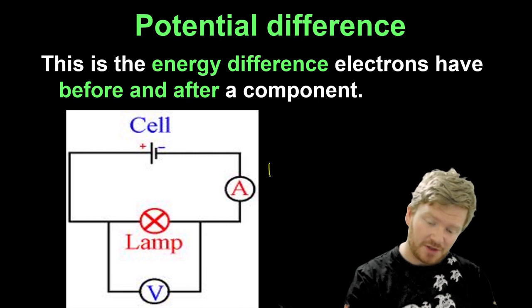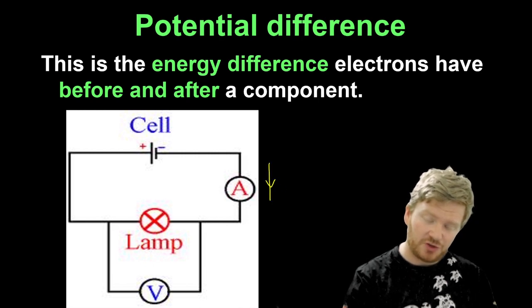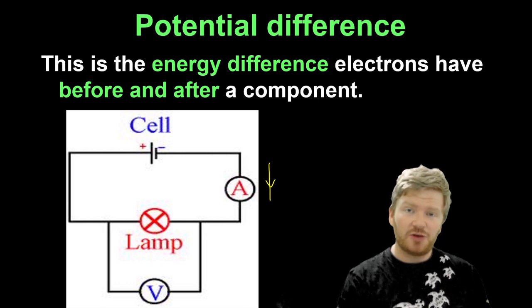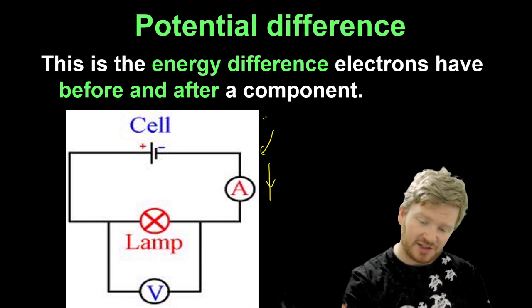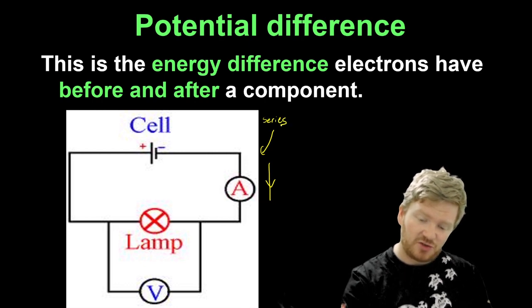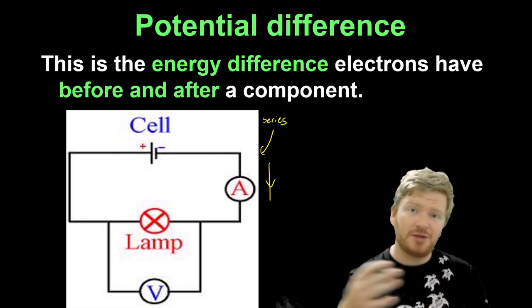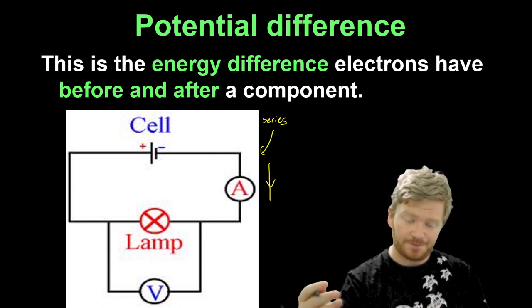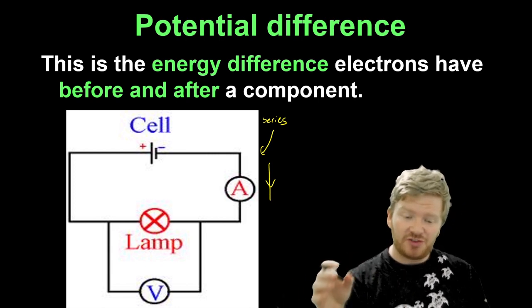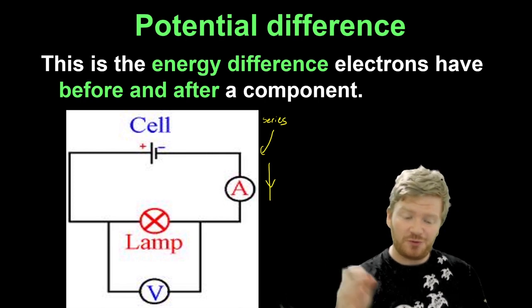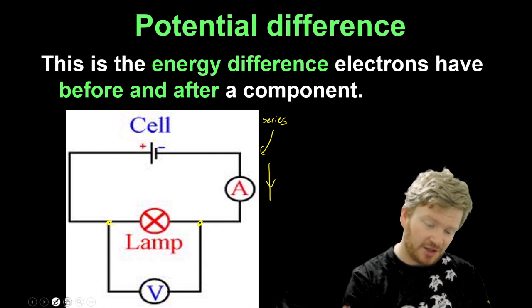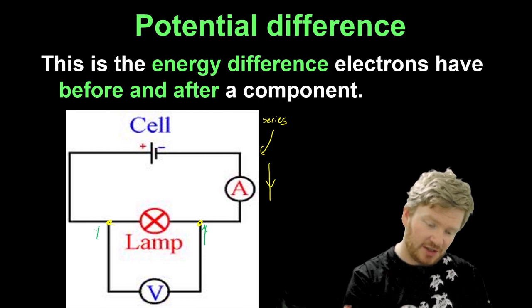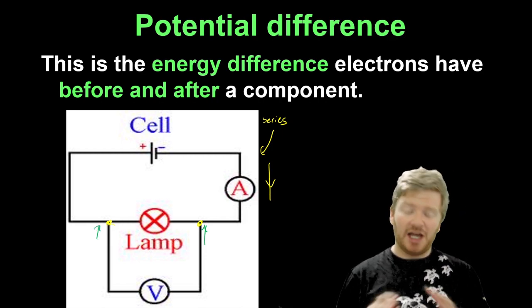Current, as we remember, is the rate of flow of charge through a component. So an ammeter needs to be in series so that all the current will flow through it and it can measure that rate of flow of charge. But a voltmeter measures the energy difference before and after something. So my voltmeter needs to be connected up here and here so that it can measure the energy here and the energy here and compare the two.